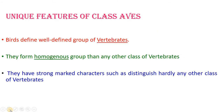Birds are a well-defined group of vertebrates. In the vertebrate series we find agnatha, fishes, followed by amphibians, reptiles, birds, and finally mammals. Birds are entirely different from all other groups of vertebrates. The study of birds is called ornithology.